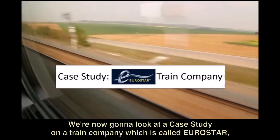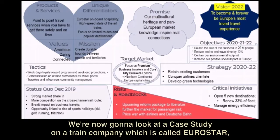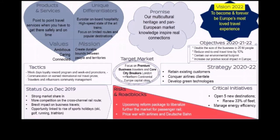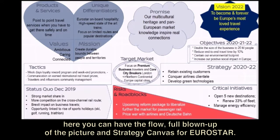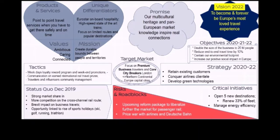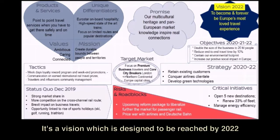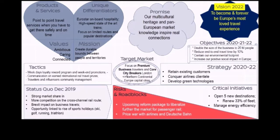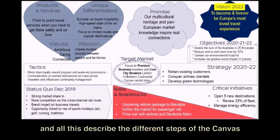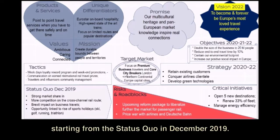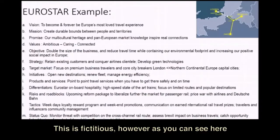We're now going to look at the case study on a train company called Eurostar. Here you can see the full blown-up picture and the strategic canvas for Eurostar. It's a vision designed to be reached by 2022, and all this describes the different steps of the canvas starting from the status quo in December 2019. This is fictitious.